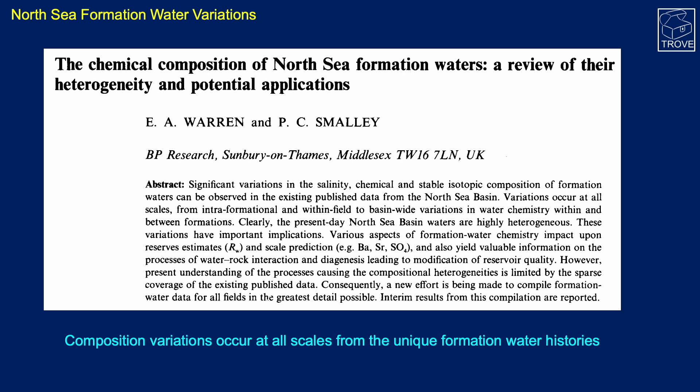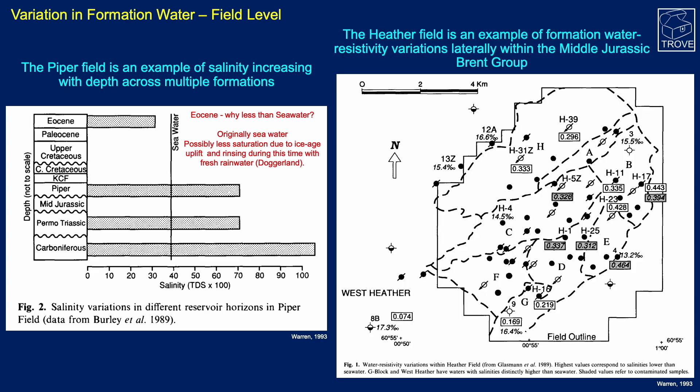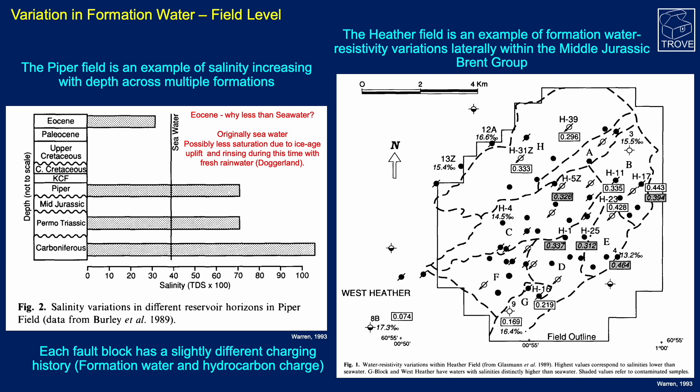For North Sea formation waters, there's a great paper by Warren and Smalley that gives an analysis and overview of the heterogeneity you can get in formation waters in the North Sea. From their paper we can find information about how formation water composition varies within a field - an oil field or a gas field. This example shows the Piper field and how salinity increases with depth. Another example, the Heather field, shows that formation water changes laterally within the Middle Jurassic Brent Group, which can be because of different charging histories for both formation water and the hydrocarbon charge.